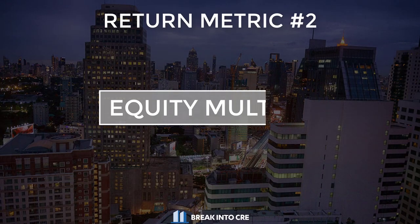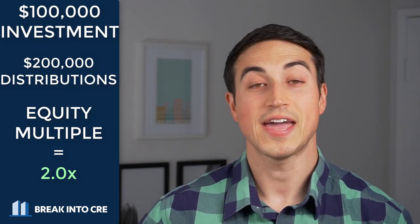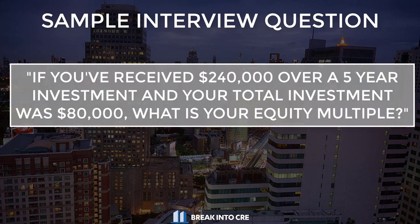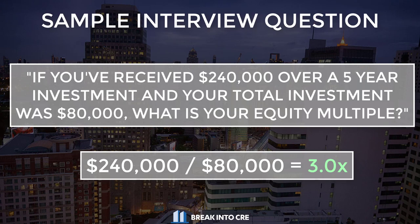From there, they may ask you a question about the equity multiple. The equity multiple is exactly what it sounds like — it's a multiplication of your equity investment in the deal. So if you invested $100,000 in a deal and got $200,000 back in aggregate over the entire life of the investment, your equity multiple would be 2.0. A sample interview question might be: if you received $240,000 over a five-year period and you invested $80,000 in the deal, what is your equity multiple? In that case, it would be 3.0.